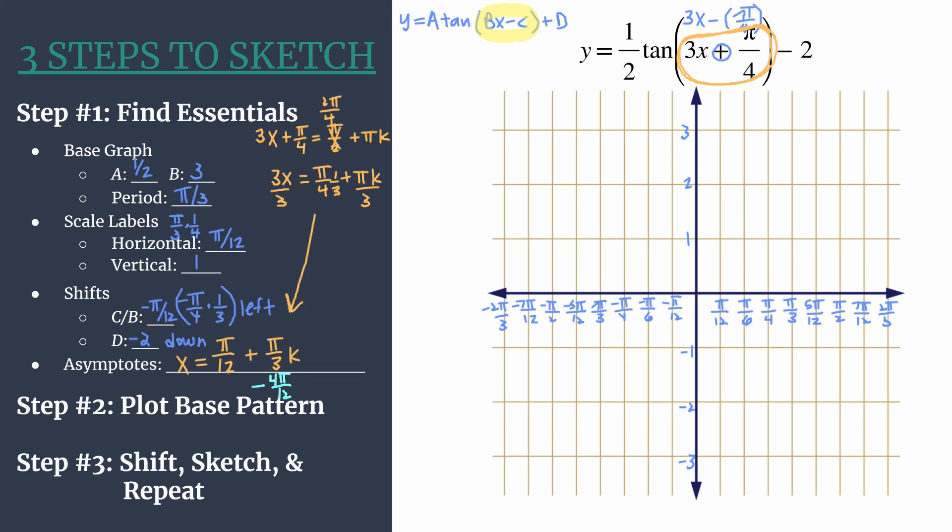Our base pattern of tangent will be x-intercept, curve shaping point, asymptote, curve shaping point. Let's start at the origin. Mark lightly or with your different color. We have a point on the origin. Our curve shaping point will happen at our first horizontal tick mark, and its y-coordinate will be the value of a, so 1/2. Remember, we have a vertical compression going on here. Lightly mark at the next horizontal tick mark an asymptote.